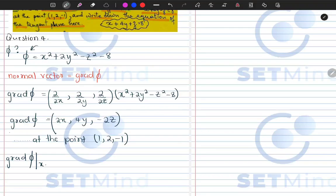So our gradient at x is 1, y is 2, and z is negative 1. What we are going to get will be 2 into 1, 4 into 2, and minus 2 into minus 1.